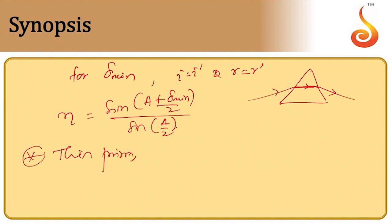For a thin prism, the deviation can be written directly as delta = (n - 1) times A.